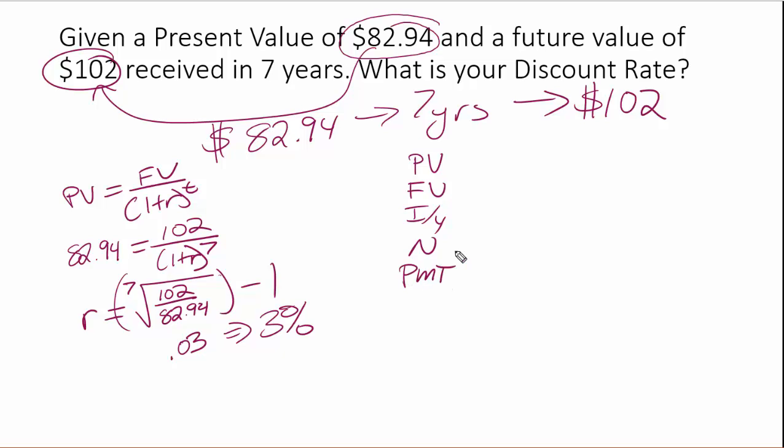And if we are solving here, remember, we can only have one unknown in any equation. So we have to plug something in if we're solving for one thing, which in this equation, we're solving for I over Y.